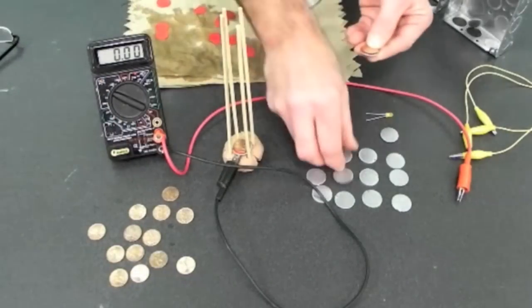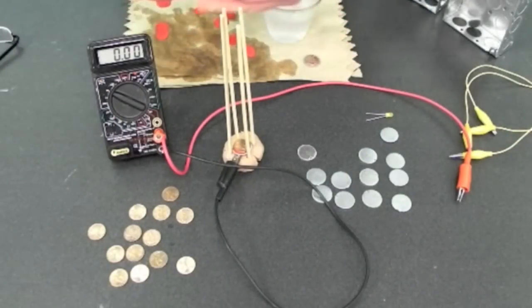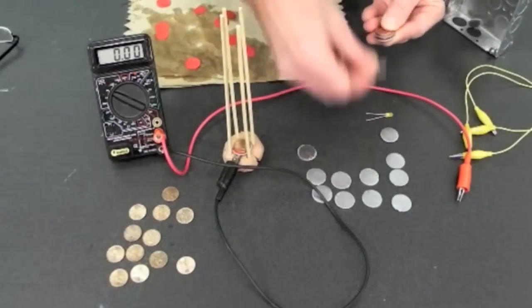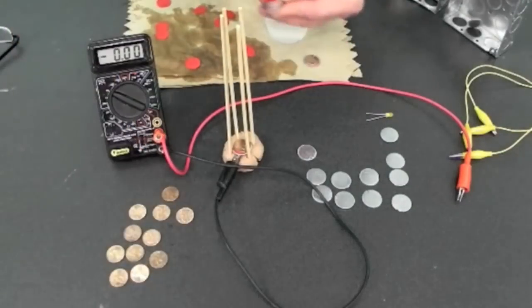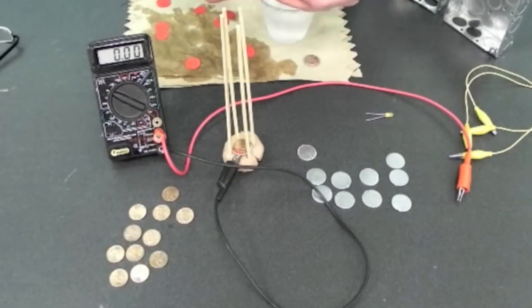I start making more of these cells and pile them on top of each other, where the zinc of one cell is always in contact with the copper of another. This essentially is connecting our electrochemical cells, the positive of one copper cell to the negative, the zinc, of another cell.